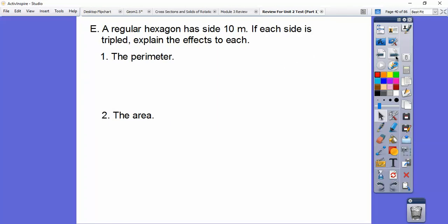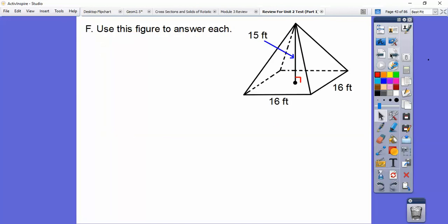A regular hexagon has side 10 meters. If each side is tripled, explain the effects on the perimeter. The perimeter is also going to be tripled. It's going to be the same. The area, since triple means times 3, the area is going to be 3 squared. So it's going to be 9 times as big. Remember the scale factor lesson we did?